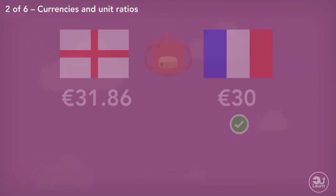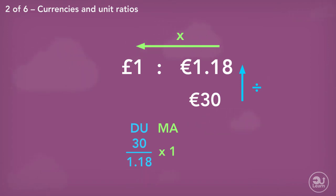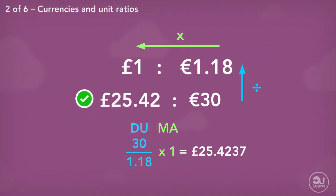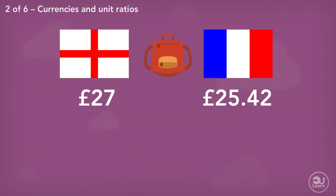If euros were converted instead, we'd lay out the ratio in a similar way: divide up, multiply across. 30 divided by 1.18, multiplied by 1, equals 25.4237, which is approximately £25.42. Comparing the amounts in pounds, we come to the same conclusion — it is still cheaper to buy the bag in France.